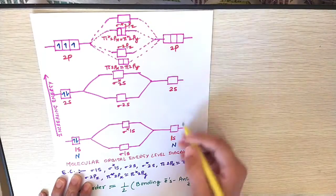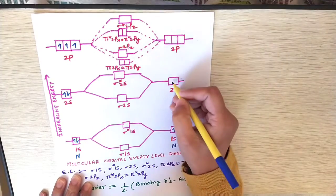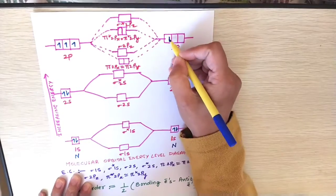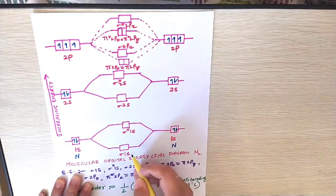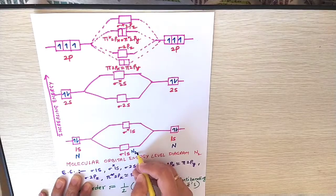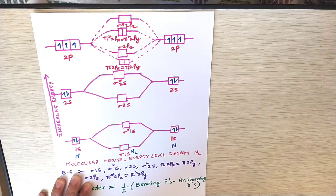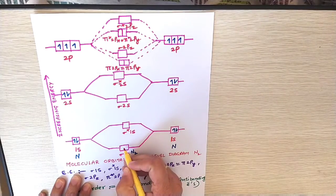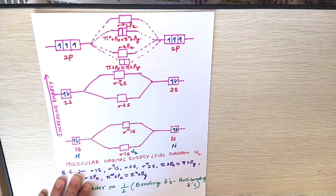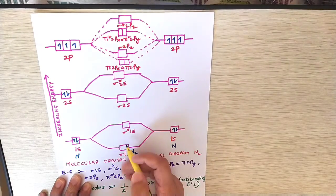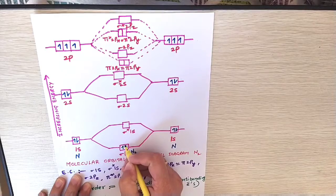Here also 1s2, 2s2, 2p3. And here it is the filling of nitrogen molecule. So in the nitrogen molecule you have to fill up 14 electrons here. So let us start filling 14 electrons.